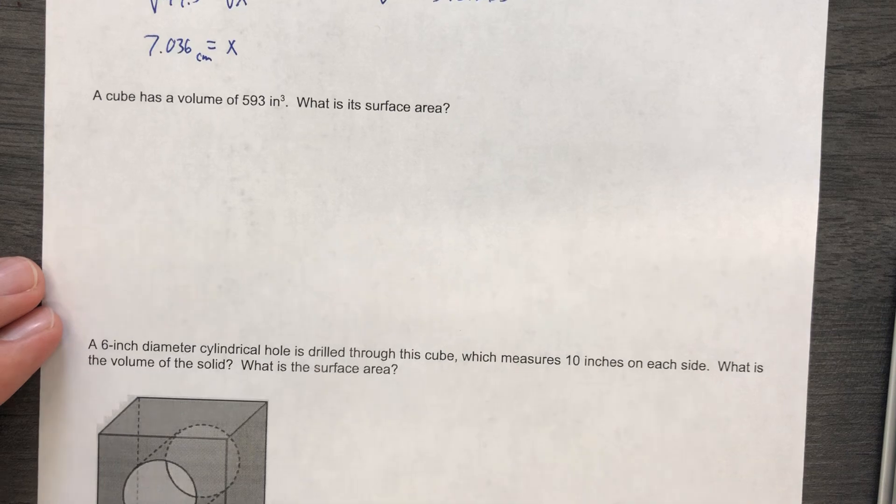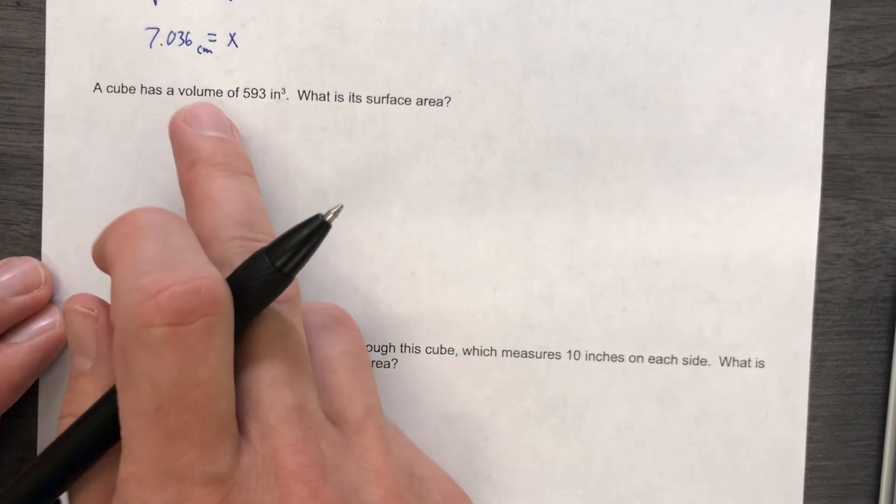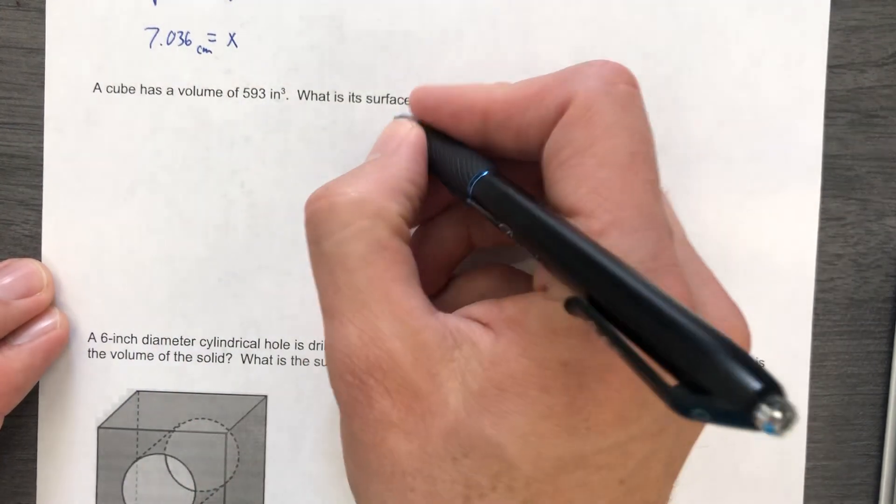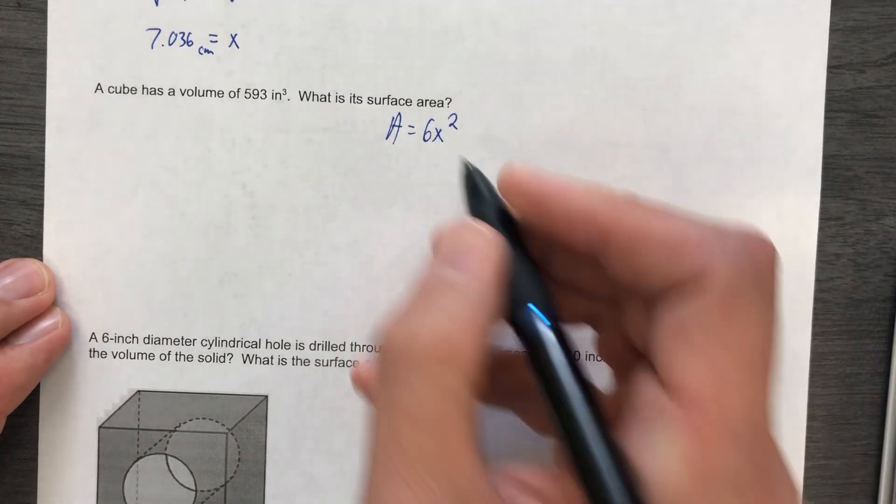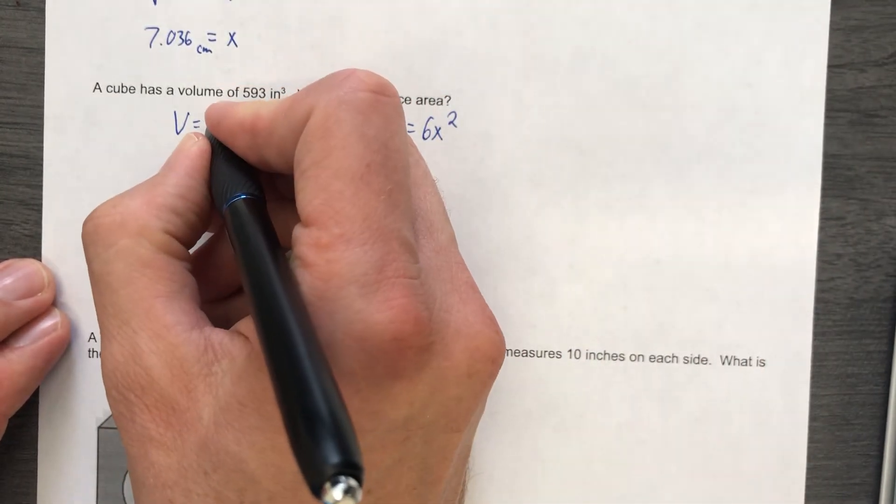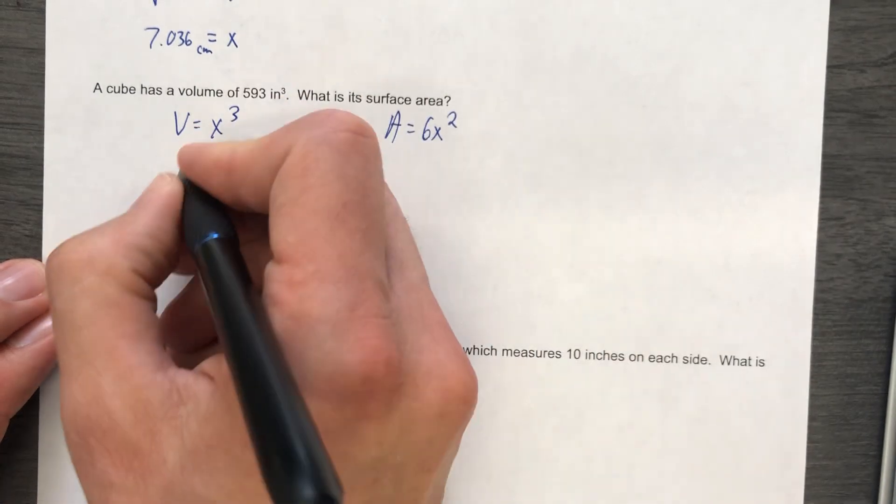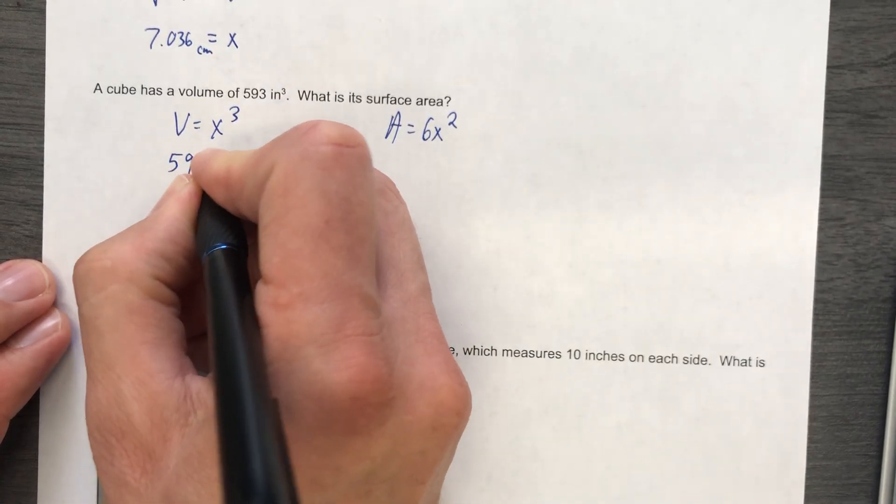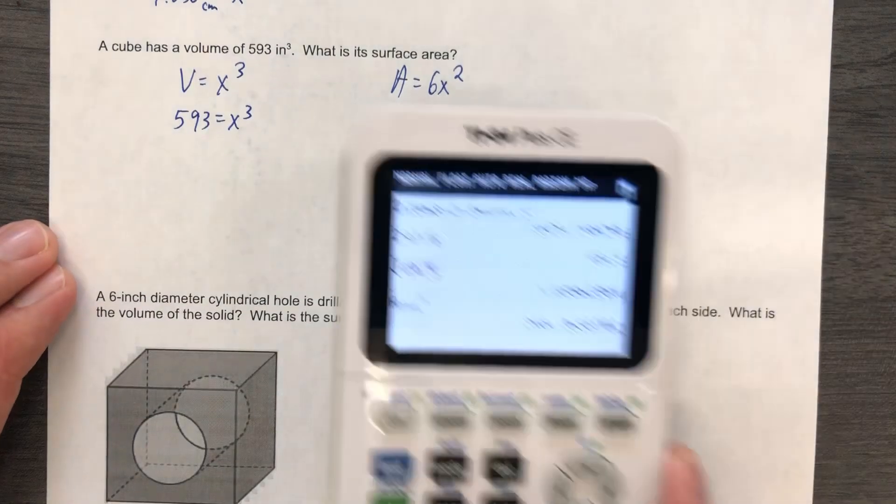Okay. Now we have a cube with a specific volume and then with the surface area, jump to the end. This is your surface area. Don't know X. You could have guessed that. Volume is X cubed. So 593 equals X cubed. We're going to take the cube root of that.